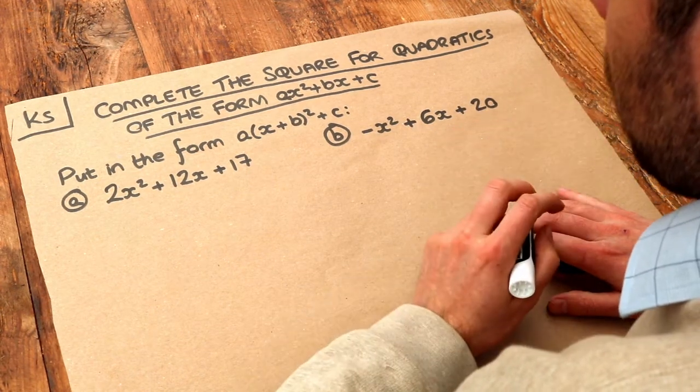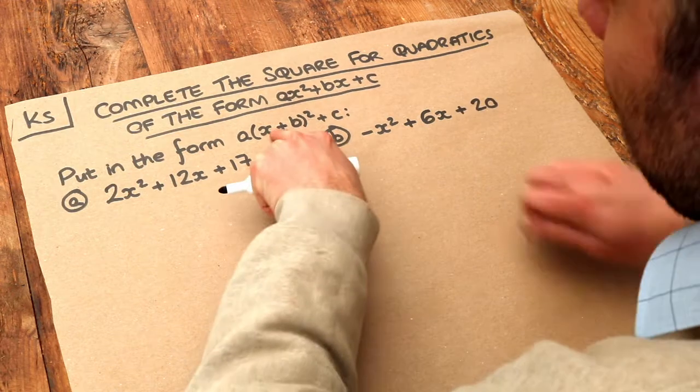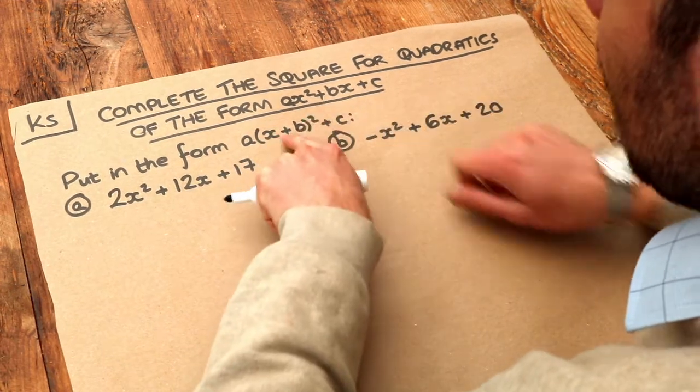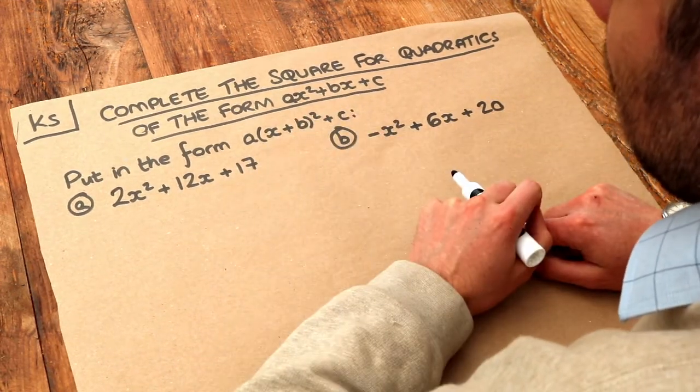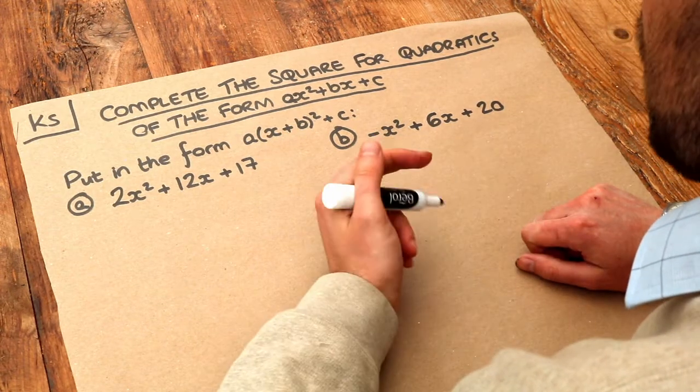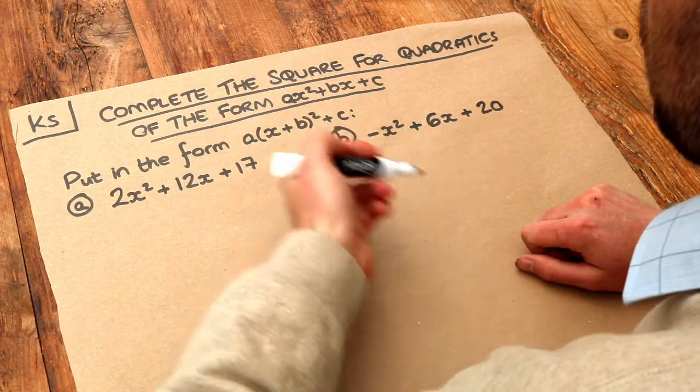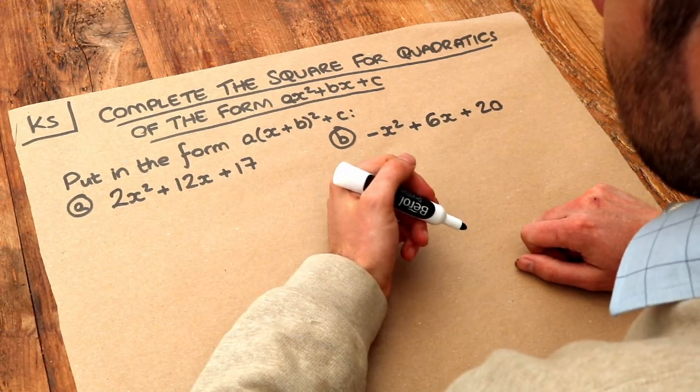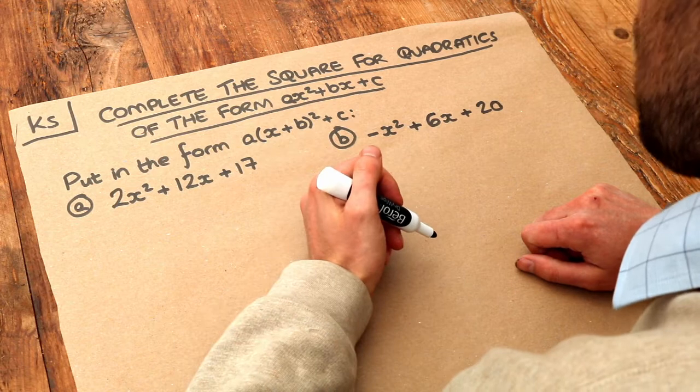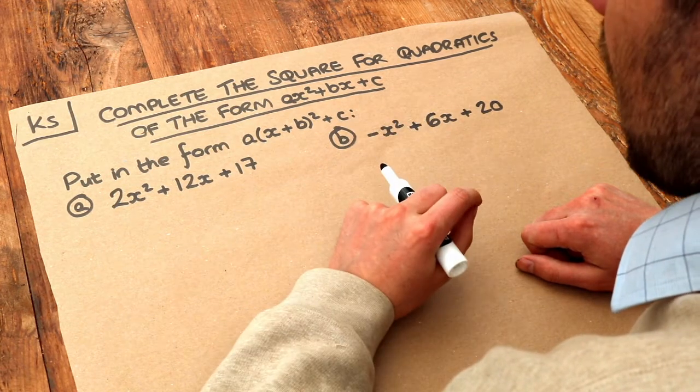Now remember to complete the square means to get an expression where you have the x in a bracket like this squared and the x only appears once in the expression. Now we won't explore in this video but this particular form has lots of practical uses, for example for finding the centre of a circle, for finding the minimum or maximum point of a quadratic, etc. But we'll focus on that later.